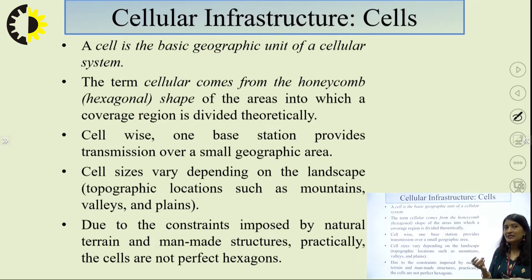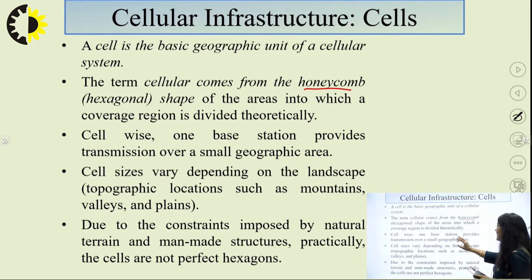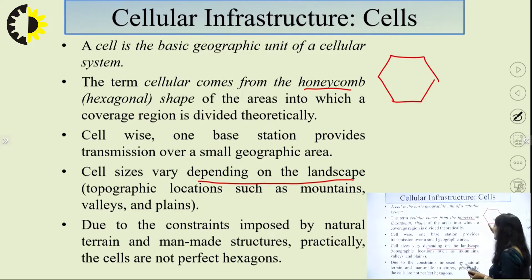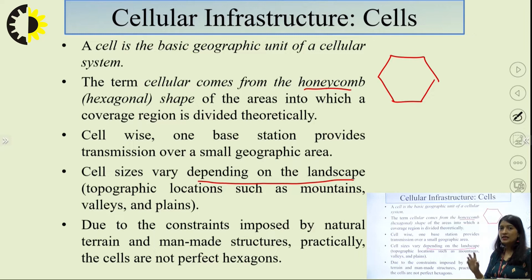A cell is the basic geographical unit of a cellular system. The term 'cellular concept' comes from the honeycomb structure — the shape of areas into which a coverage region is divided. Each cell has one base station providing transmission over a small geographical area. Cell size varies depending upon the landscape; the cell shape considered is hexagonal, also known as the honeycomb shape, and this cell size is not fixed for the entire area.